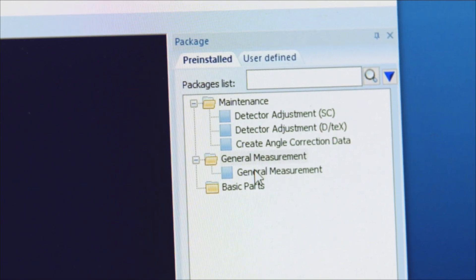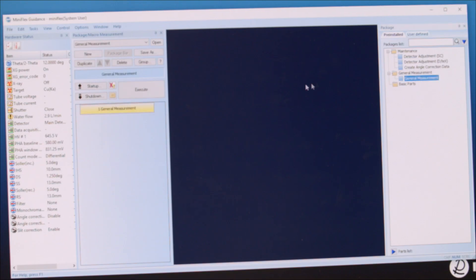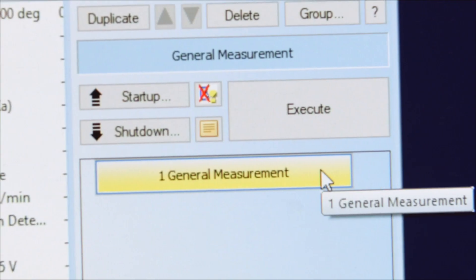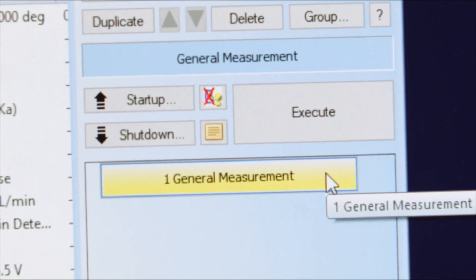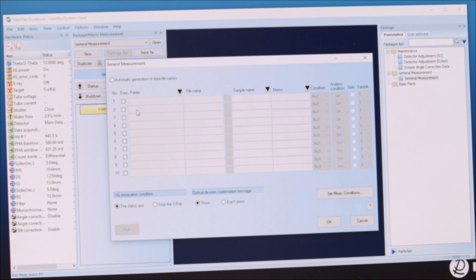Under the package window, locate General Measurements in the pre-installed tab. Double-click General Measurement and a General Measurement button will appear in the Package Macro Measurements window. Click this and a new window will appear.